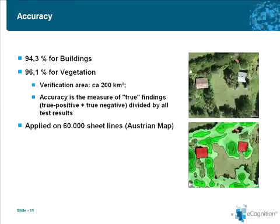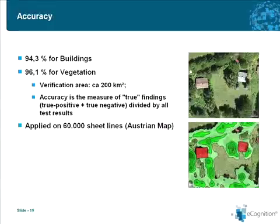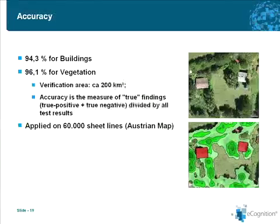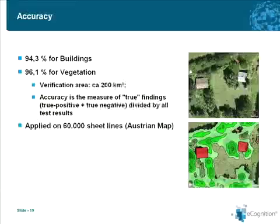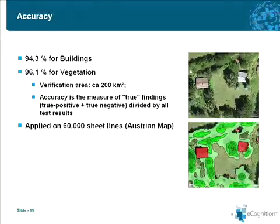In an accuracy assessment, the accuracy achieved was around 94% for buildings and around 96% for vegetation, identifying building or vegetation areas correctly versus non-correctly, checked by a visual interpreter. The verification area was around 200 square kilometers and the entire project covers the whole of Lower Austria — 60,000 sheet lines corresponding to 20,000 square kilometers. So this is a pretty large-scale project.